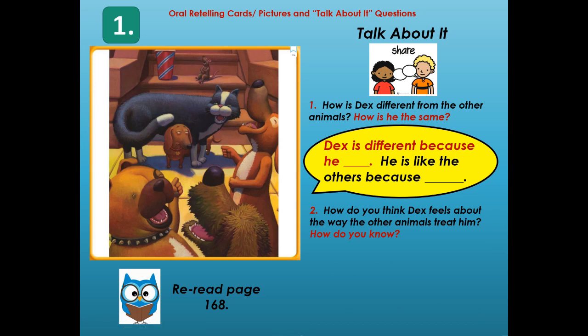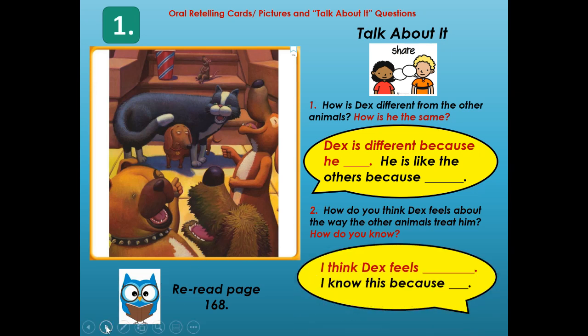How do you think Dex feels about the way the other animals treat him, and how do you know? Look closely at his facial expression. Well, I think Dex feels annoyed or irritated, maybe even a little sad or mad. His eyes are telling me he's like, 'Really, why are they laughing at me?' I know this because I can see it in his facial expression. He has goals and doesn't want to hang out with animals that tease him, because it doesn't make him feel good.